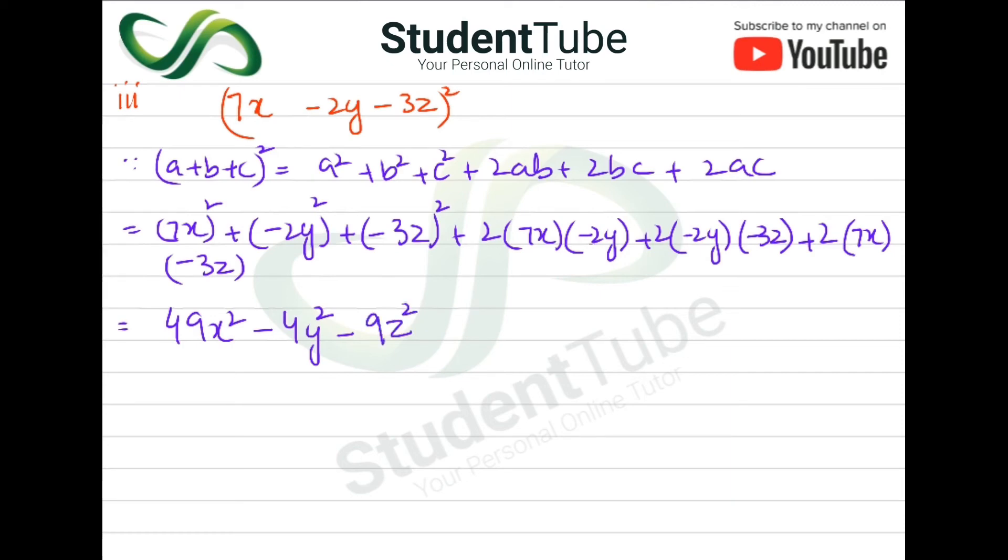Now, plus 2 times 7 is 14, and 14 times 2 is 28, so minus 28xy. Plus 2 times 2 is 4, and 4 times 3 is 12. Since minus times minus is plus, this will be plus 12yz. Then 2 times 7 is 14, and 14 times 3 is 42, so minus 42xz. Answer.